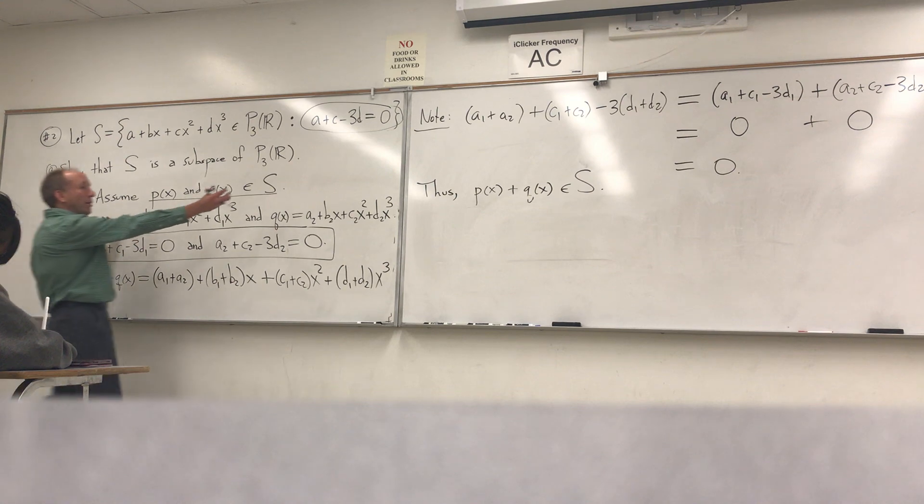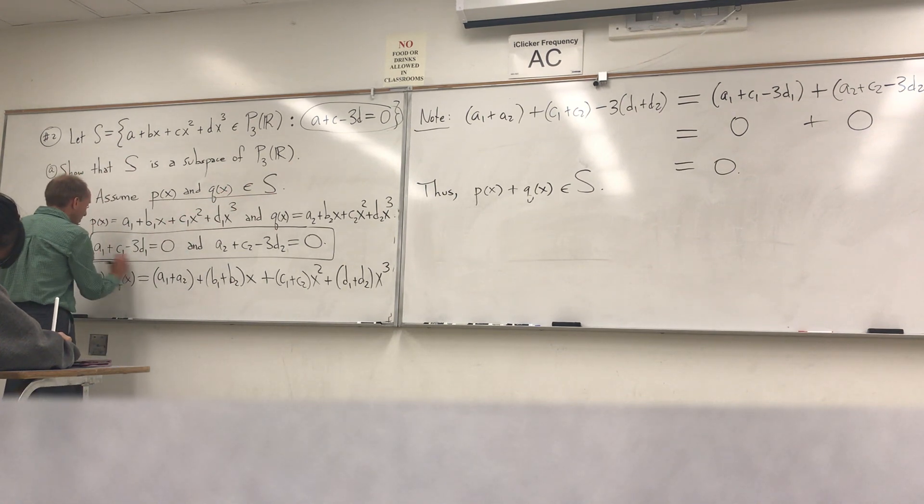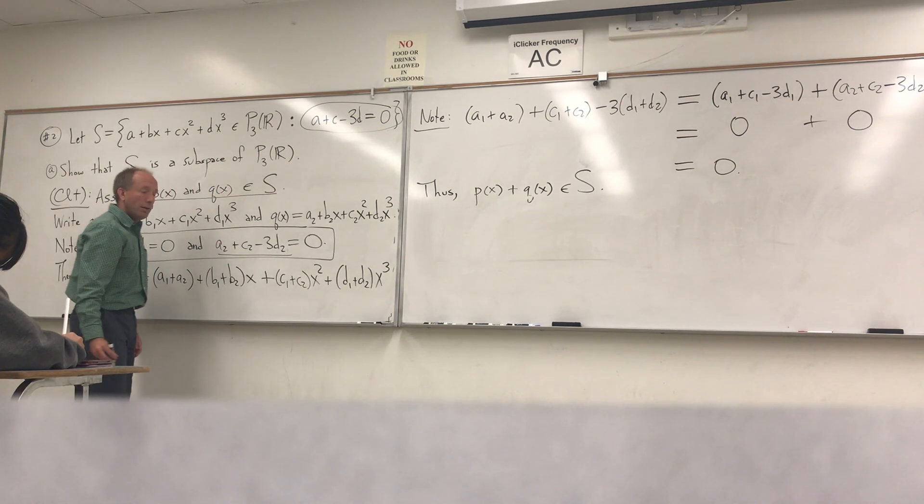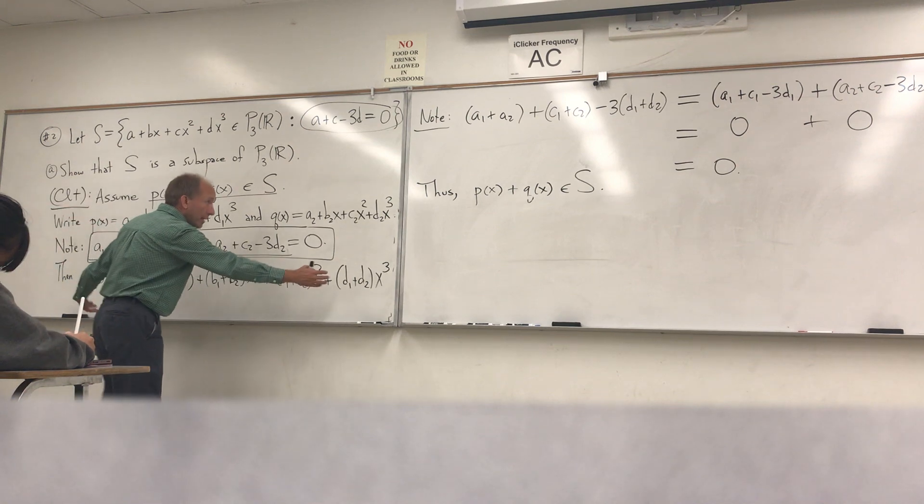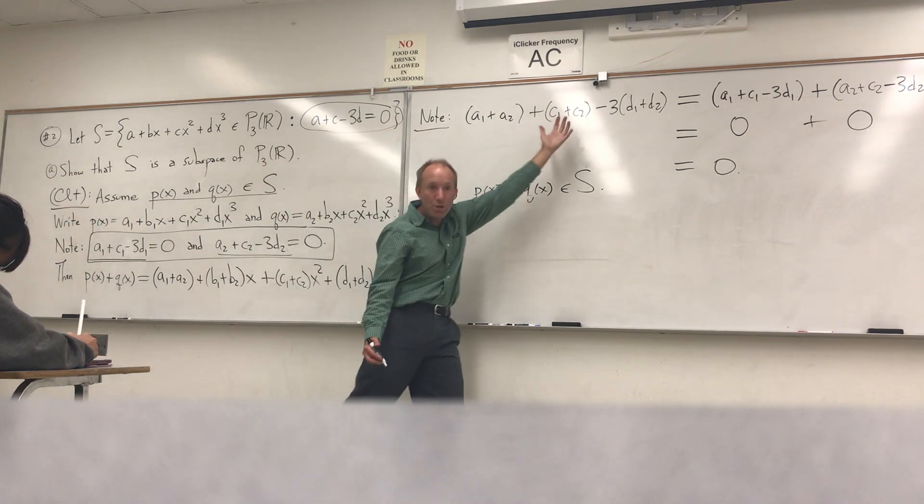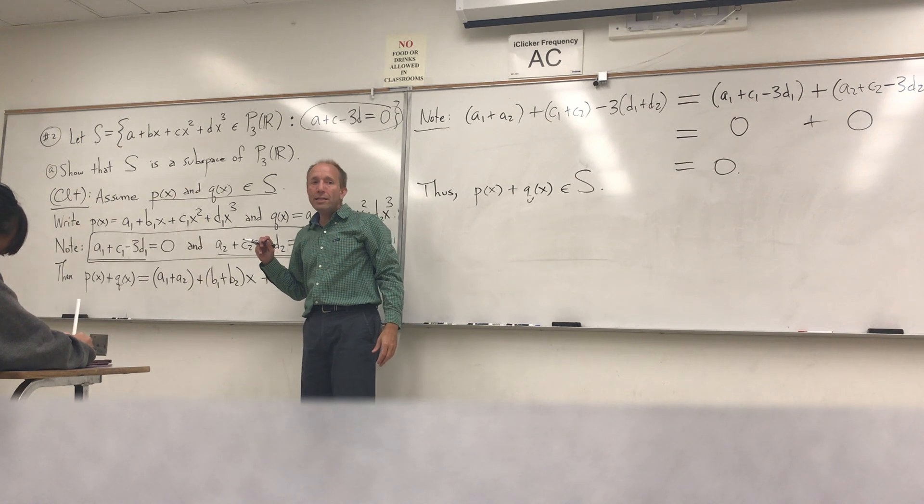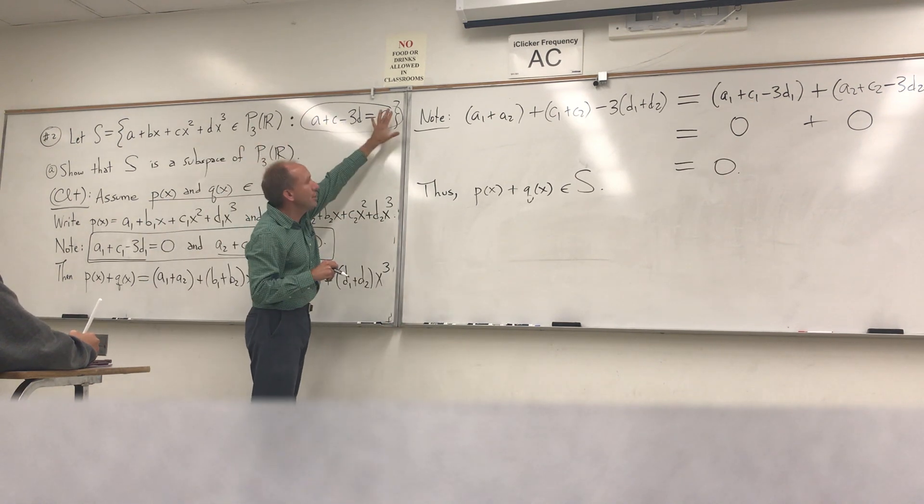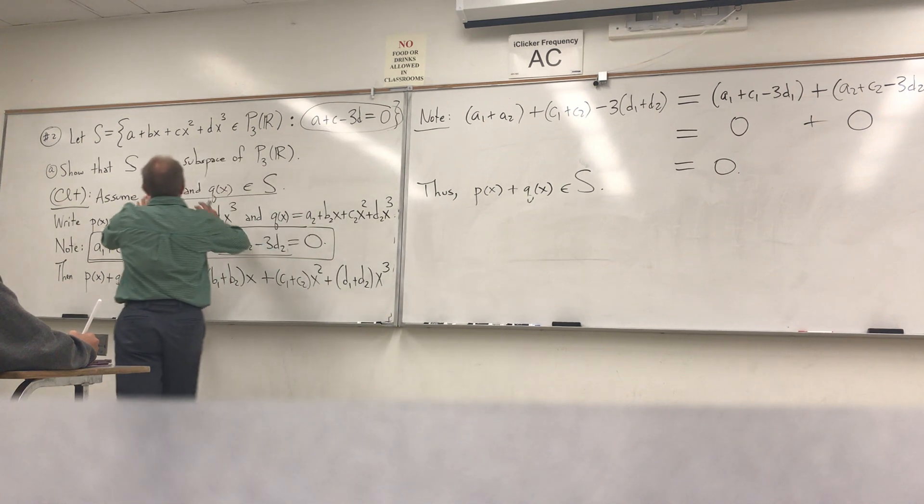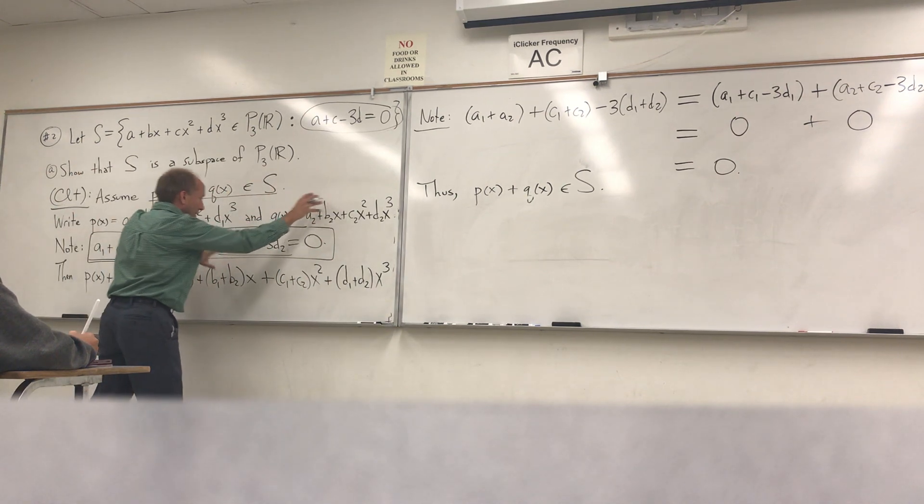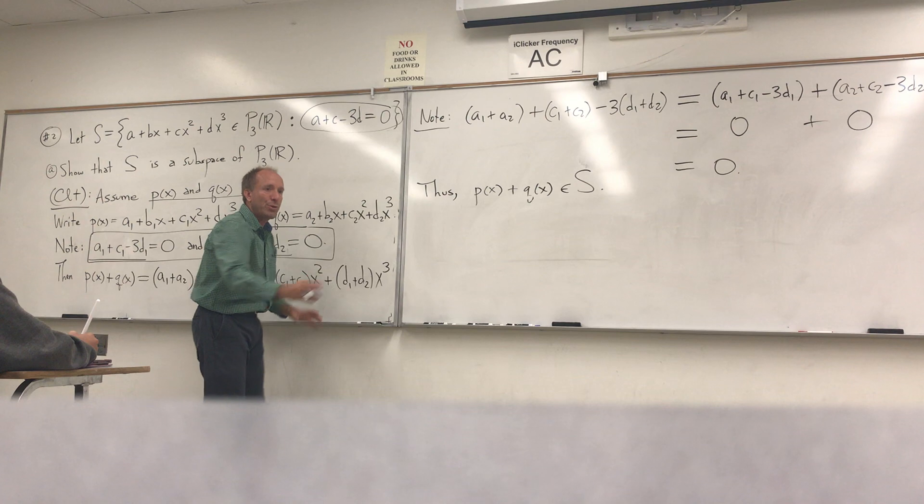So we take two individual polynomials. We write down these conditions. We add the polynomials together. And then we check that same condition about the new polynomial. I see sometimes people will do these problems without ever mentioning this part. They'll just take, here's the p of x, here's the q of x. They add them together. They put element of S, and they stop.